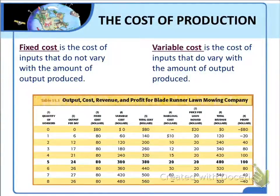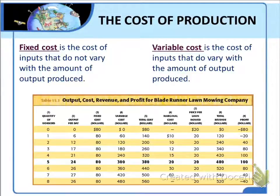What you've learned about production involves inputs and outputs. The inputs, mowers and workers, and the output, lawns mowed, are all measured as quantities. But firms are in business to make profit, which is measured in dollars. In this video, we'll begin to translate our knowledge about production into dollars. The first step is to understand how much it costs to produce different amounts of output.